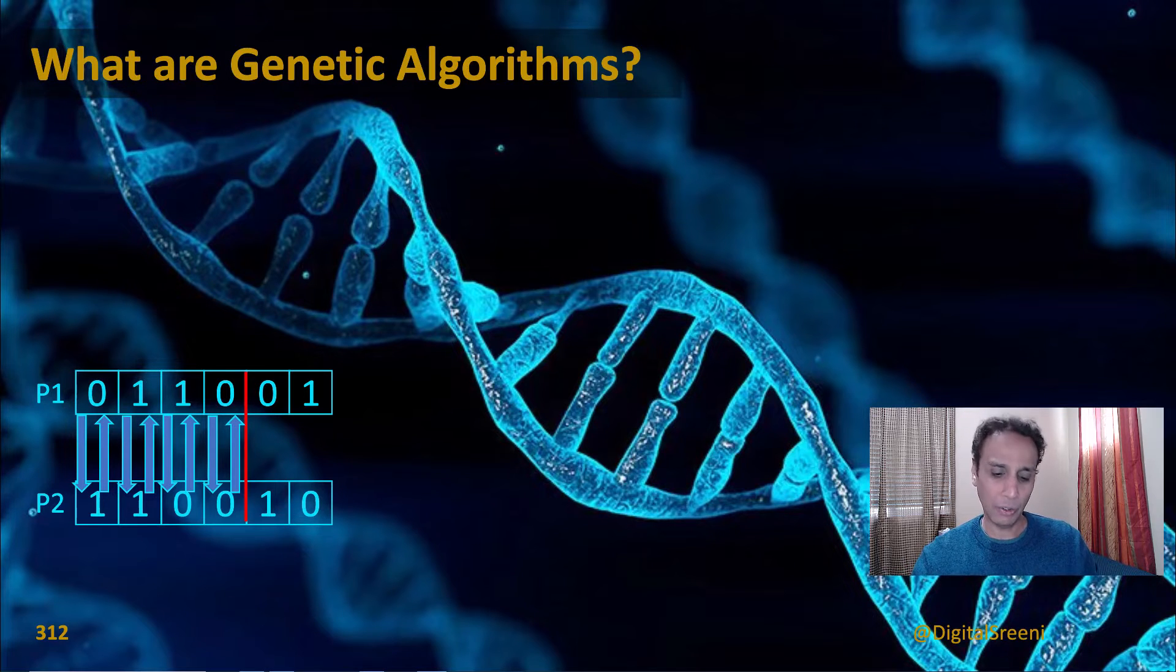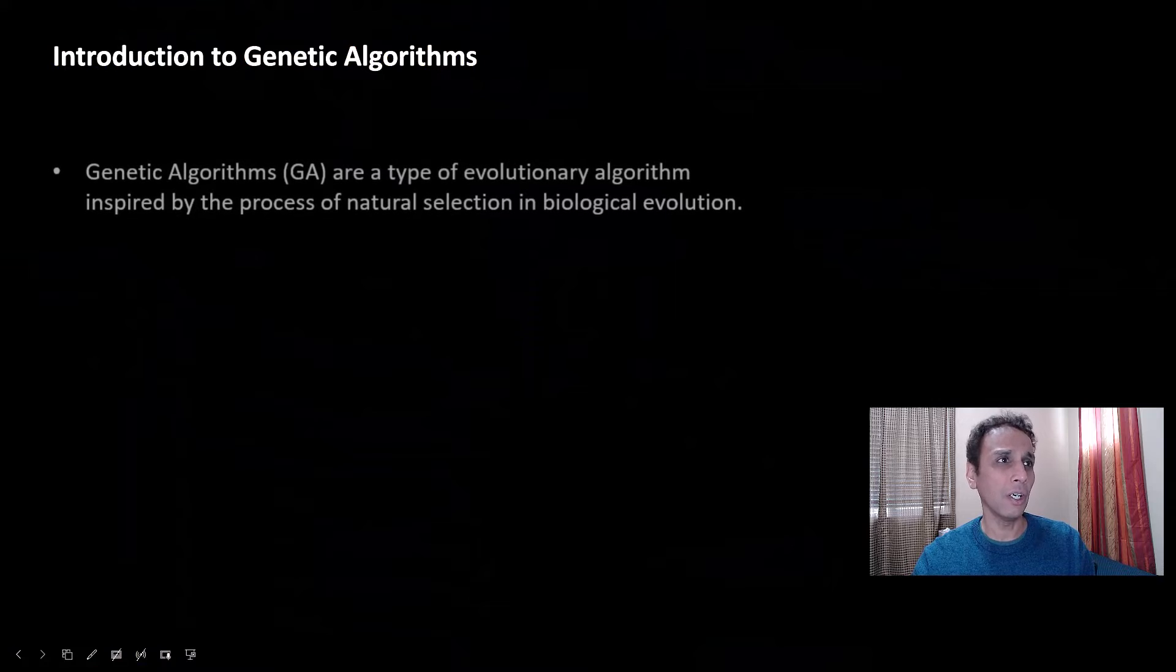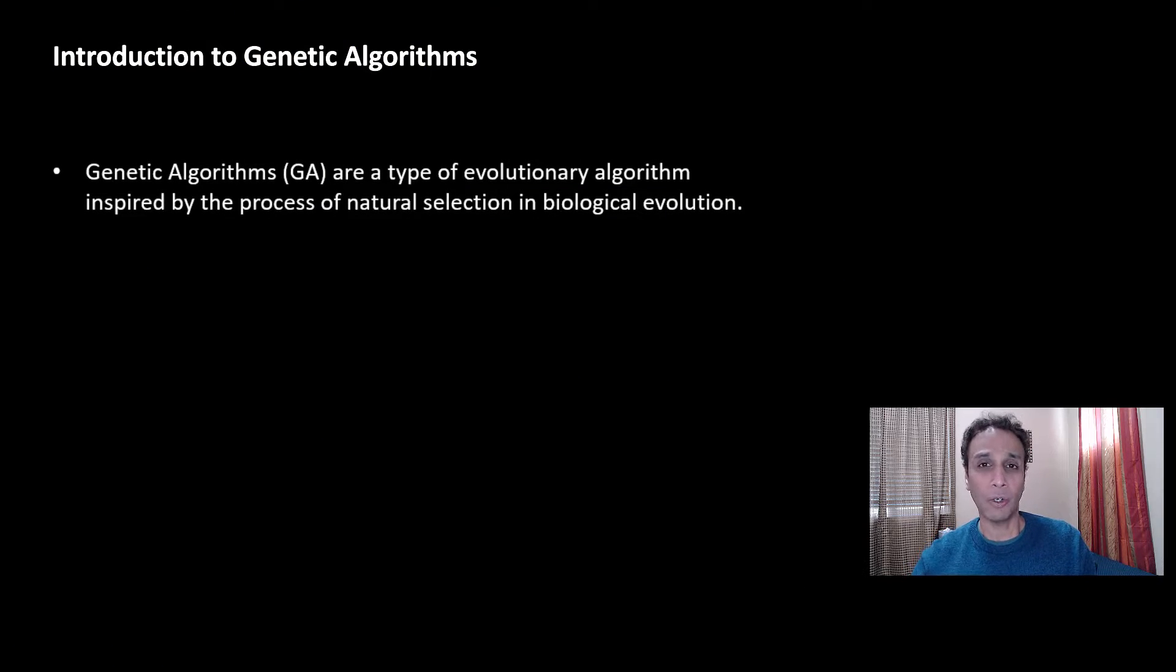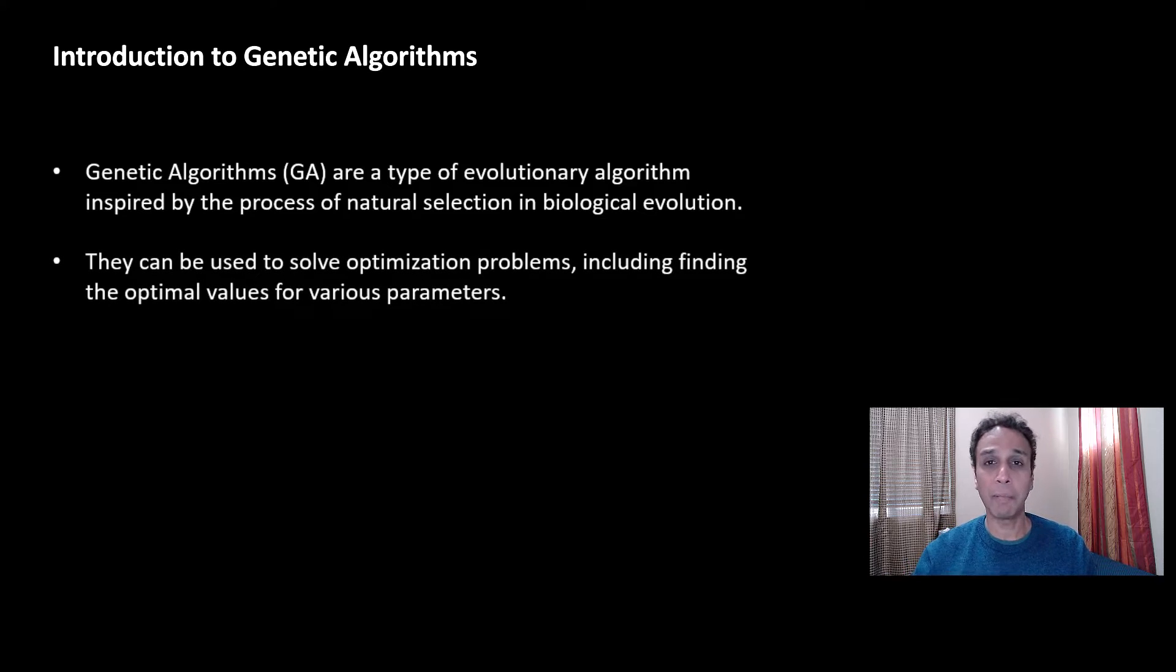So first of all, what are these genetic algorithms? Genetic algorithms are a type of evolutionary algorithm—it's in the name, it says genetic, it's an evolutionary algorithm, which means you have different evolutions. And as these evolutions go by, something gets better. And it's inspired by the process of natural selection in biological evolution.